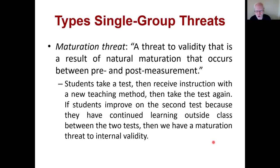The maturation threat is a threat to validity resulting from natural maturation that occurs between a pre- and post-test measurement. Students take a test, receive instruction with a new teaching method, and take the test again — but they might improve on the second test because they continued learning outside of class or just naturally matured. It may have nothing to do with the instruction; it may just be natural evolution.